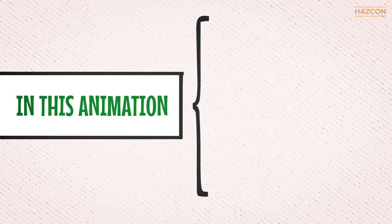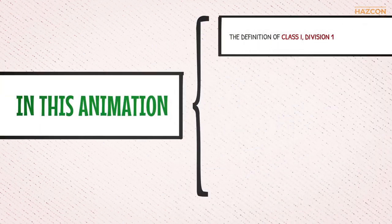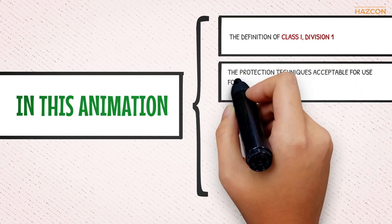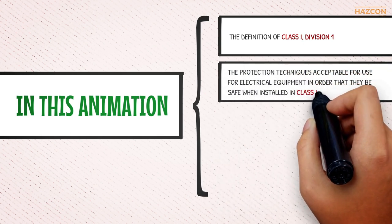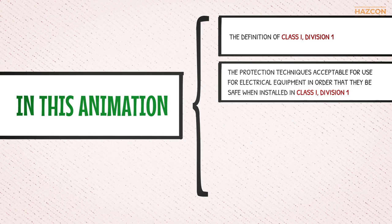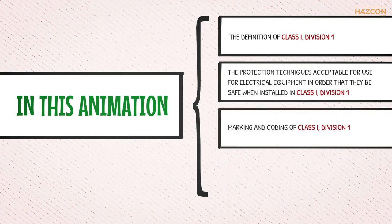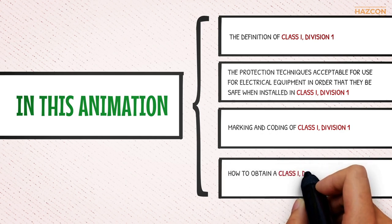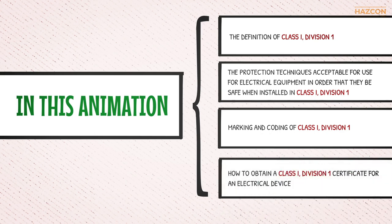In this animation we discuss: one, the definition of Class 1 Division 1; two, the protection techniques acceptable for use for electrical equipment in order that they be safe when installed in Class 1 Division 1; three, marking and coding of Class 1 Division 1; four, how to obtain a Class 1 Division 1 certificate for an electrical device.